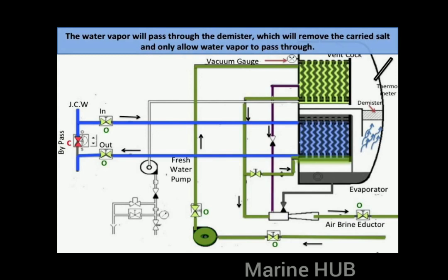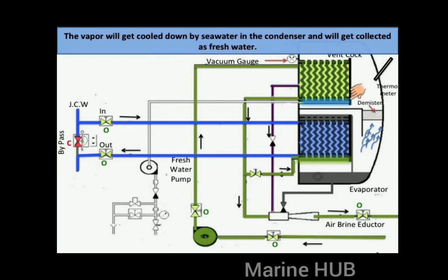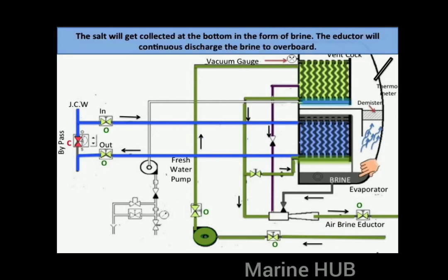The demister removes carried salt and only allows water vapor to pass through. The shell temperature will increase and there will be a slight drop in vacuum — this indicates that evaporation has started. The vapor will then get cooled down by seawater in the condenser and will be collected as fresh water.